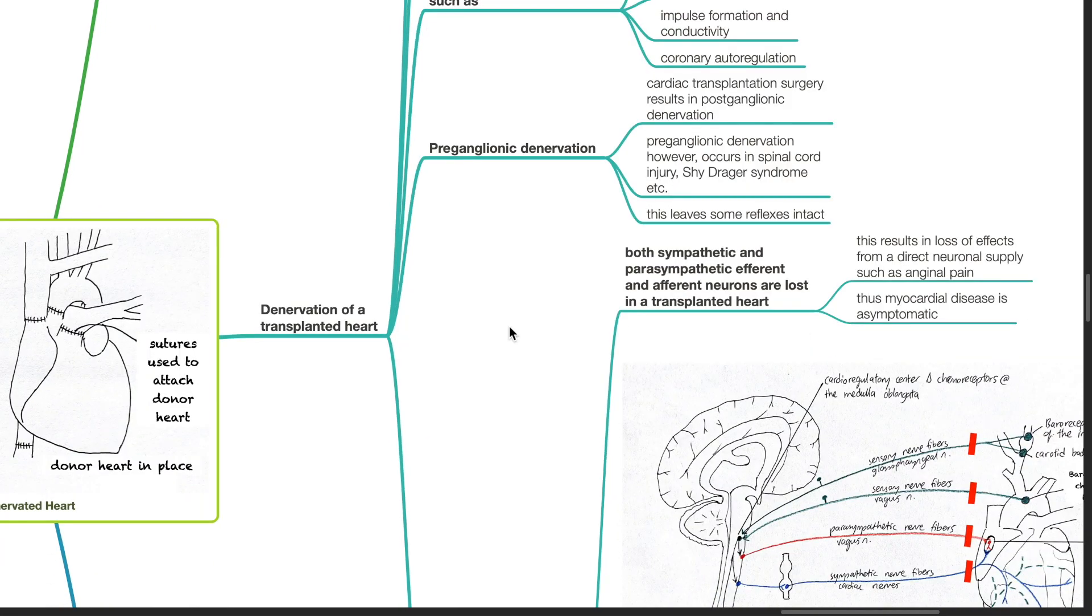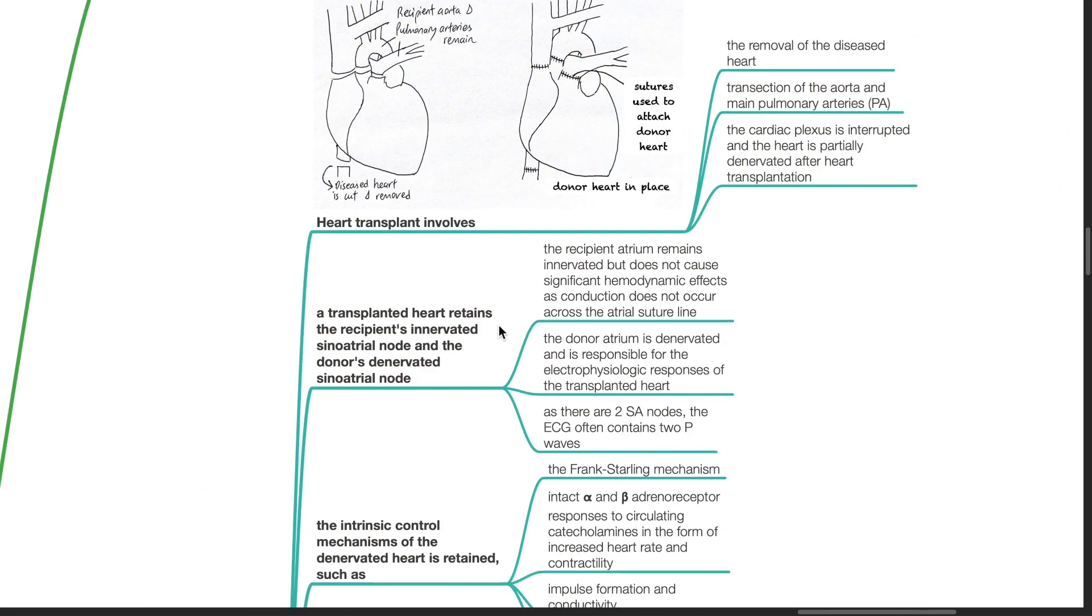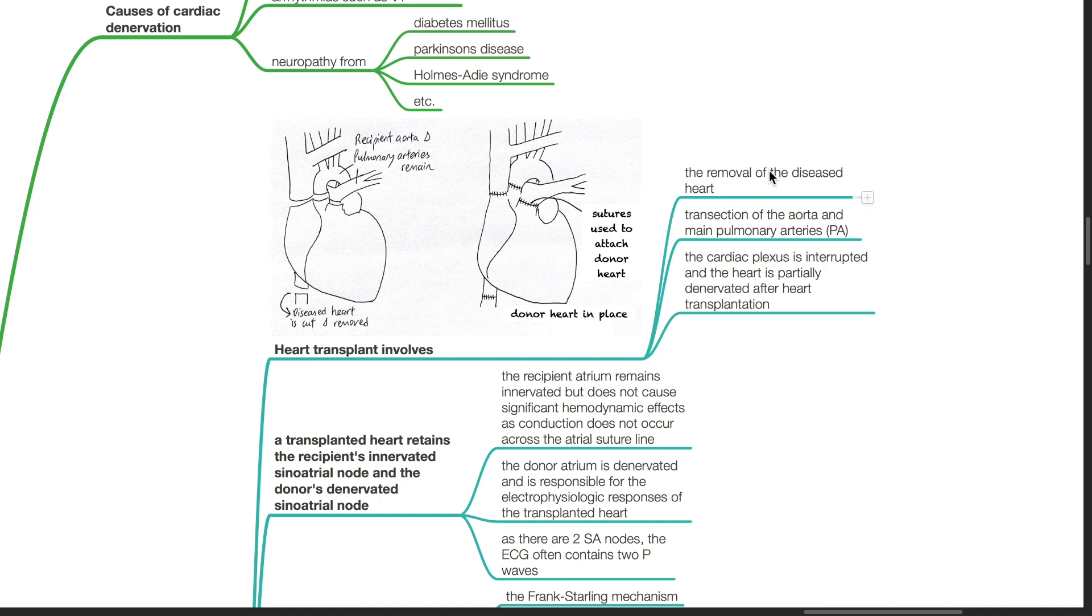Denervation of a transplanted heart. Heart transplant involves the removal of the diseased heart, transection of the aorta and main pulmonary arteries, the cardiac plexus is interrupted, and the heart is partially denervated after heart transplantation.